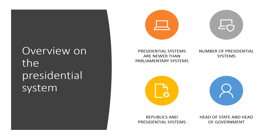The last point in this overview: in a presidential system, the head of state is the head of the government — the head of the executive branch. It's one person; there is no distinction between the head of state and the head of government. Like the American example, the American president is the head of state and the head of the executive branch. Similarly in Turkey after the last constitutional amendment, Erdogan as head of state is also head of the executive branch.